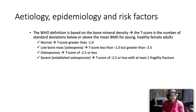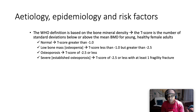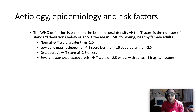A normal T-score is greater than minus one. Low bone mass, or osteopenia, is a T-score between minus one and greater than minus 2.5. Osteoporosis is when your T-score reaches minus 2.5 or less. Severe or established osteoporosis means a T-score of minus 2.5 or less with at least one fragility fracture.